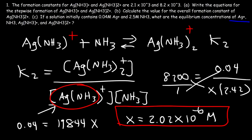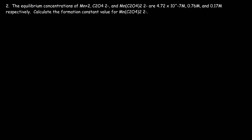So now we have the values for every ion. NH₃ is 2.42 M. Ag(NH₃)₂⁺ is 0.04 M. AgNH₃⁺ is 2 × 10⁻⁶ M, which is basically close to 0 — that's about 0.0000002. And Ag⁺ is even smaller, essentially 3.966 × 10⁻¹⁰ M, which is very close to 0.